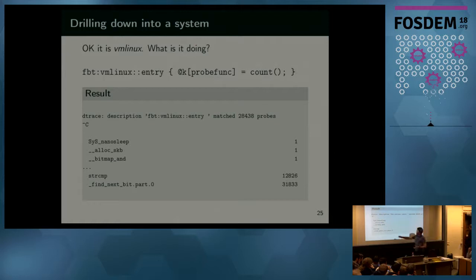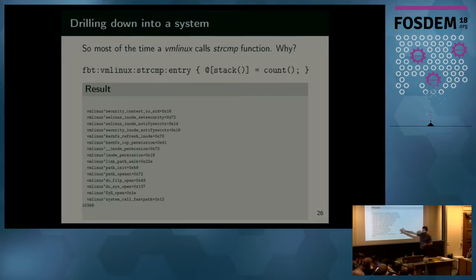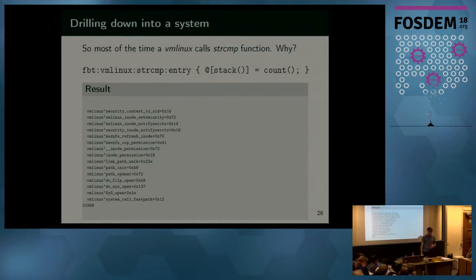Someone was calling string compare like 12,000 times, so the next question is: who and why? We narrow down the FBT description to string compare and start aggregating based on stacks. The hottest stack shows we're doing some security context comparison based on string compare — and if you go to the bottom of the stack, it comes from the open syscall, so it's a result of user space activity. At this point you need to know who in user space is doing so many syscalls.